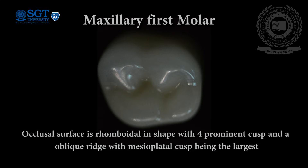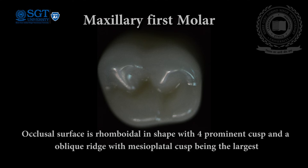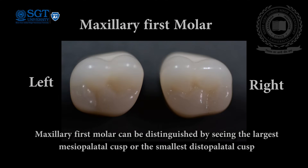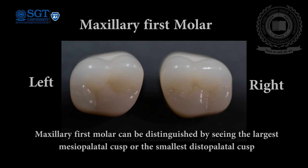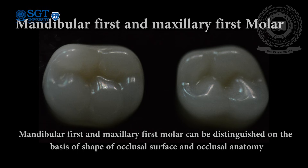The maxillary first molar is the largest tooth in the maxillary arch. It can be identified by its rhomboidal occlusal outline and the presence of an oblique ridge between the mesopalatal and distobuccal cusps. The right and left maxillary first molar can be identified by observing the mesopalatal cusp, which is the largest, or the distopalatal cusp, which is the smallest. Mandibular and maxillary molars can be distinguished on the basis of the anatomy of the occlusal surface — mandibular molar has five prominent cusps (three buccal and two lingual), whereas the maxillary molar has four prominent cusps with the mesopalatal cusp being the largest.